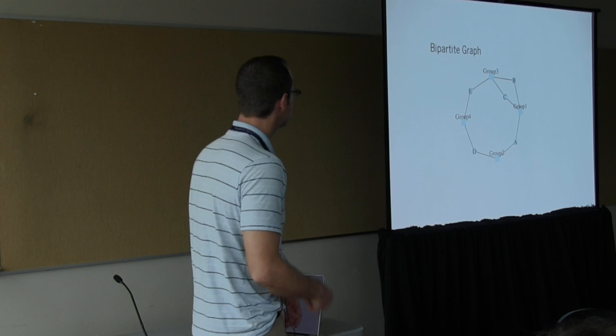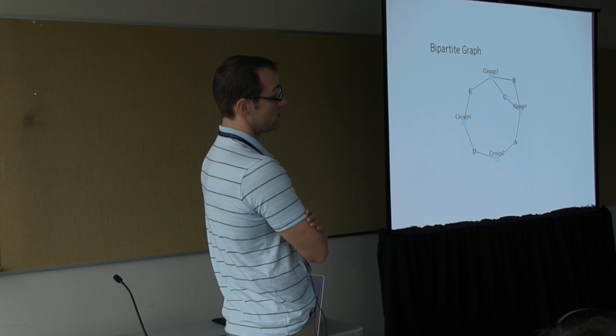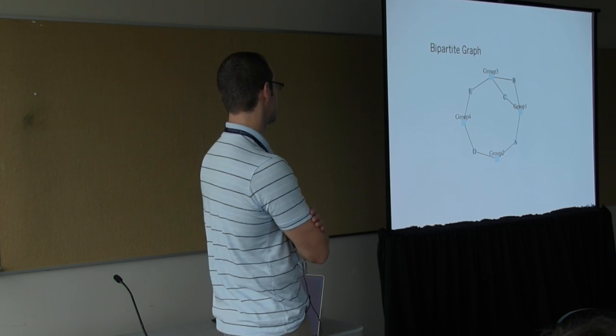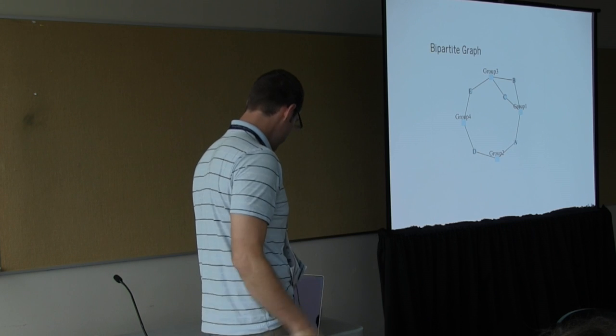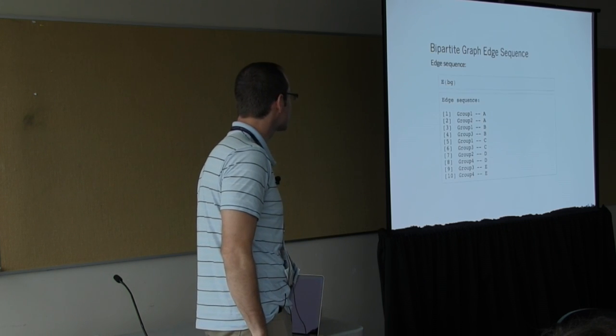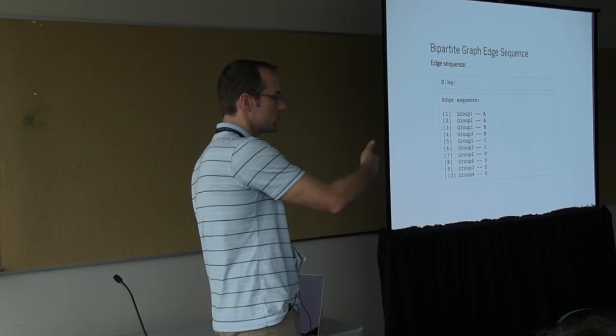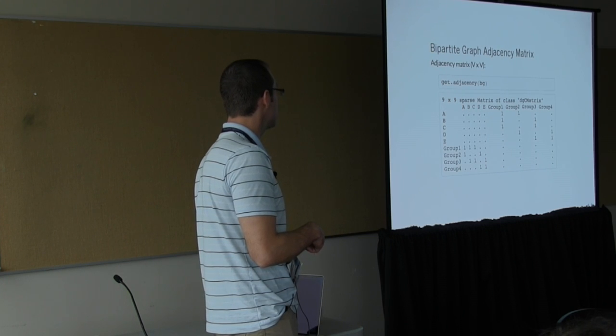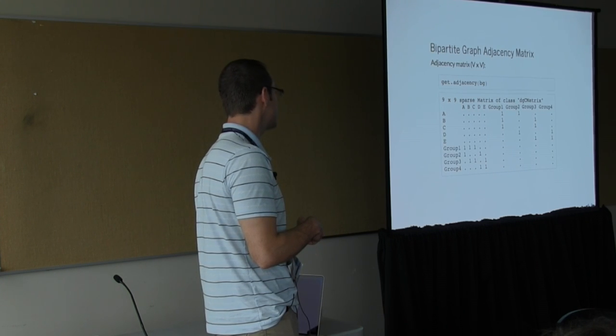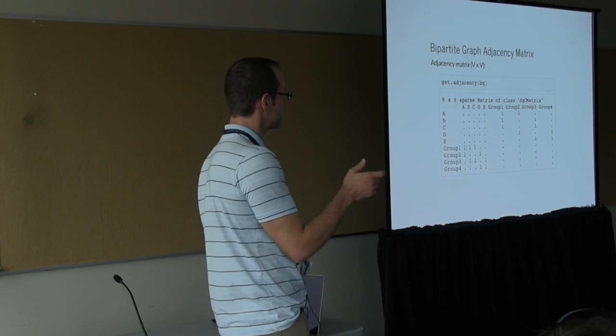And finally, this is what the bipartite graph can look like. Just assigning different shapes to the different types to easily select them out. And bipartite graphs are interesting. Of course, you can use the usual edge sequence to represent the graph.